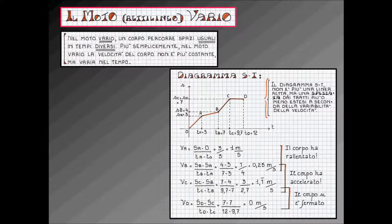Il diagramma spazio-tempo non è più in questo caso una linea retta, ma è una spezzata dai tratti più o meno estesi a seconda della variabilità della velocità.